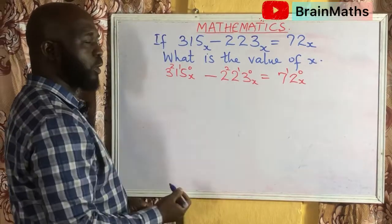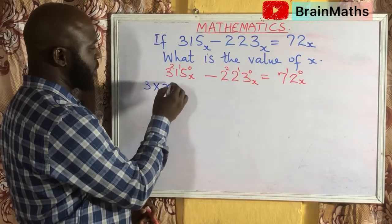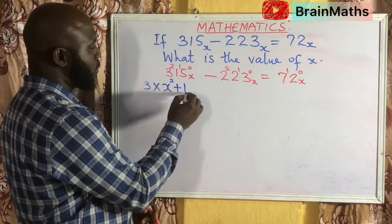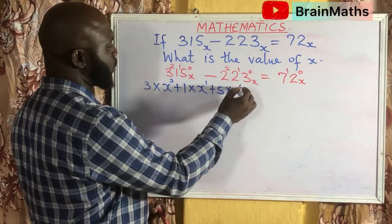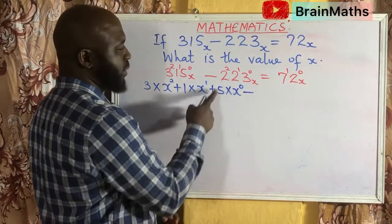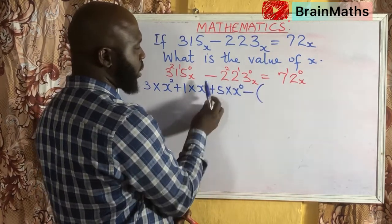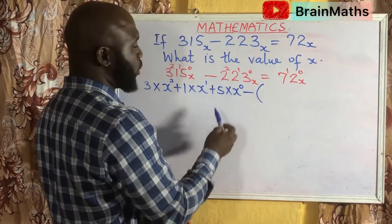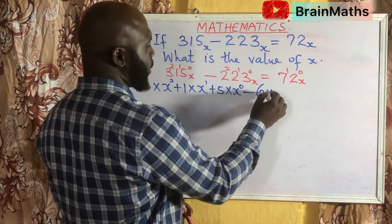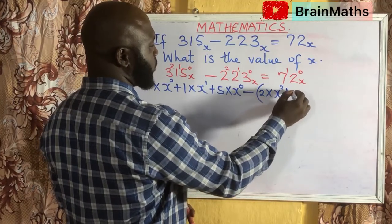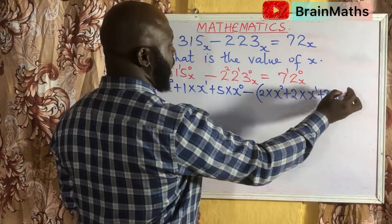The next thing is to expand each one of these using the base. We have 3 times X raised to power 2, plus 1 times X raised to power 1, plus 5 times X raised to power 0, minus — we open a bracket here because this minus belongs to all of these, not only to the 2 or the 3. So we have 2 times X raised to power 2, plus 2 times X raised to power 1, plus 3 times X raised to power 0.